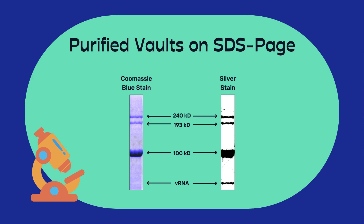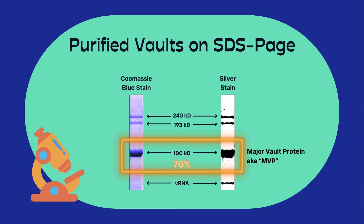Our analysis determined that the 100 KD protein made up about 70 percent of the total mass of the particle. We started referring to this protein as the major vault protein, which we nicknamed MVP.